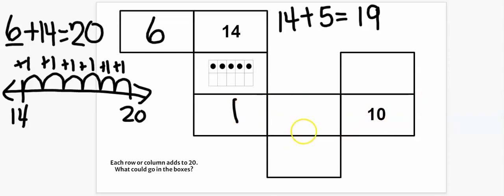1 and 9 make 10. Very good. What about this column here? If this box is 10, that's correct. This one has to be 10 because it has to be 20.